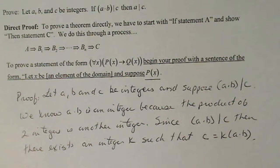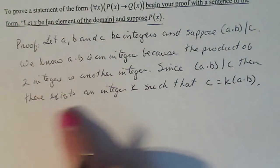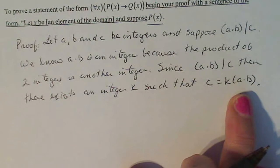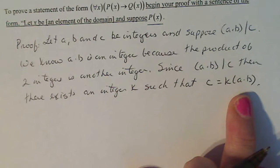That's by the definition, so I'm just going to utilize that. Since a times b divides c, then there exists an integer k such that c equals k times a times b. So how does this help me prove what I want to prove?